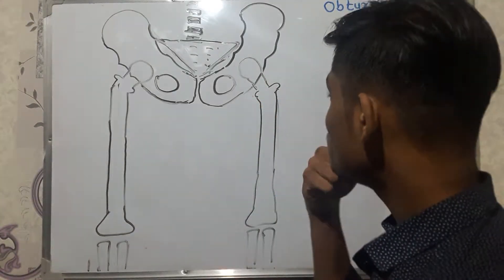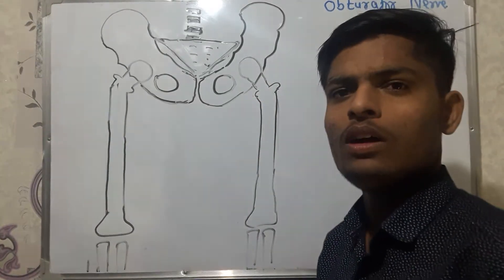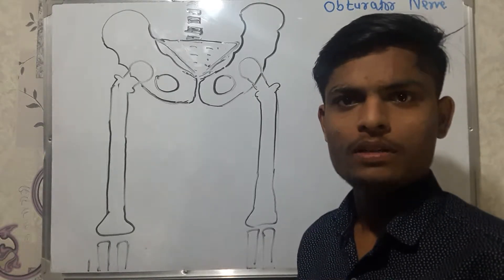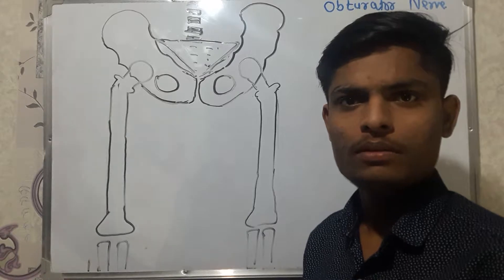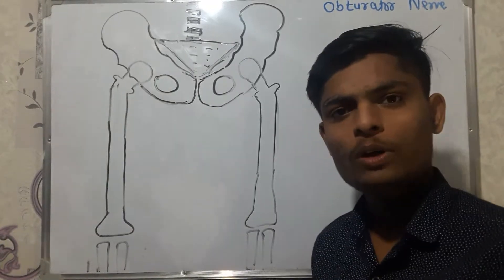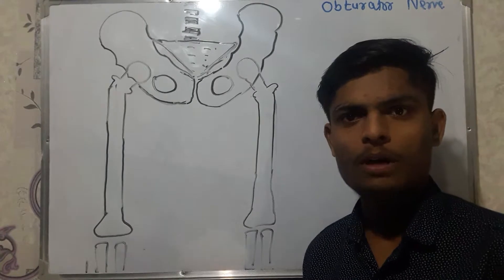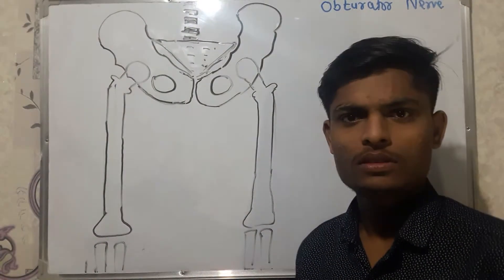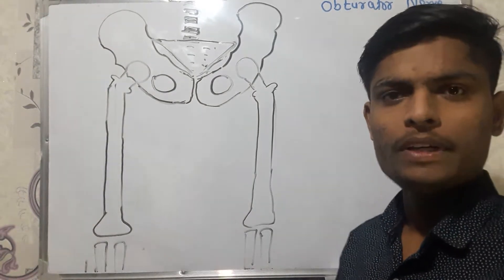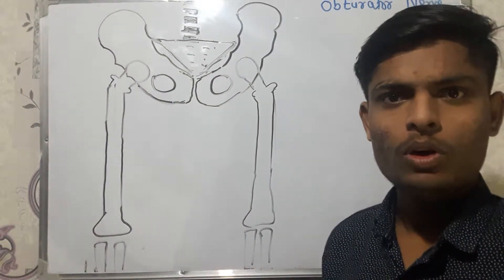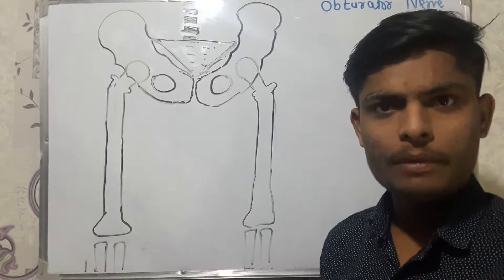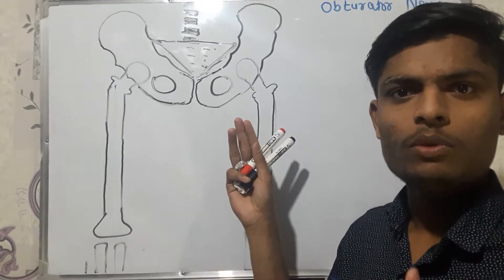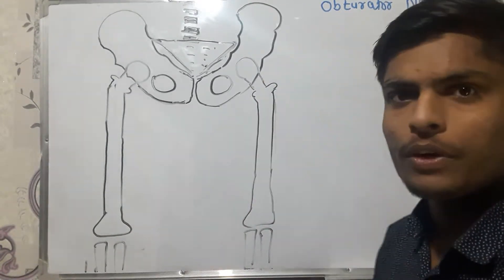In this video we will discuss the obturator nerve. We already discussed the adductor compartment of the thigh. There are three compartments: the front of thigh, the middle compartment (also called the adductor compartment), and the posterior compartment of the thigh. The nerve for the middle compartment is the obturator nerve, whereas the femoral nerve was the nerve for the front of the thigh.